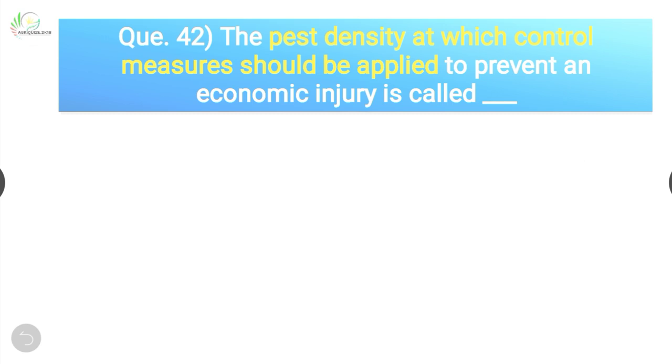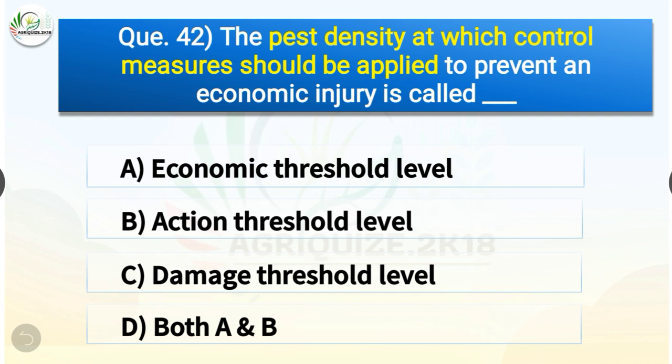Question number forty-two: the pest density at which control measures should be applied to prevent an economic injury is called — options are economic threshold level, action threshold level, damage threshold level, or both A and B. The correct answer is option D, both A and B. This pest density is called both economic threshold level and action threshold level.